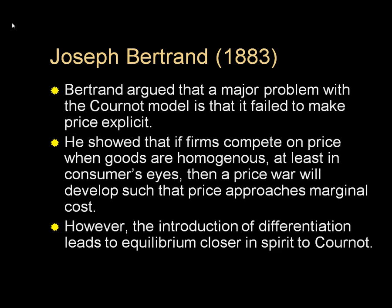A major critic of Augustine Cournot was Joseph Bertrand, who wrote a review of Cournot's model in 1883. Bertrand argued that a major problem with the Cournot model is that it failed to make price explicit. Indeed, Bertrand himself showed that if firms compete on price, when goods are similar to consumers, then a price war would develop so that price approaches marginal cost, just as in perfect competition — a perfectly competitive outcome even though there are two firms competing on price. However, if we extend the Bertrand model to examine product differentiation, then we get an equilibrium closer in spirit to that of Cournot. In sum, Cournot remains an important model of understanding oligopoly today, even though his paper was written over 160 years ago.